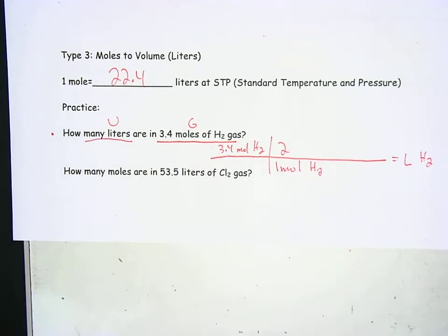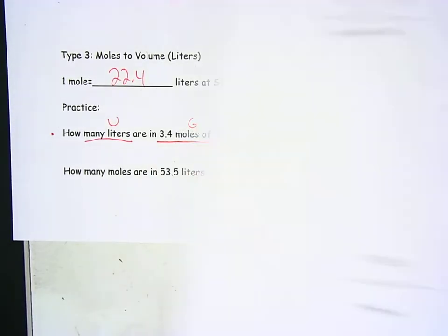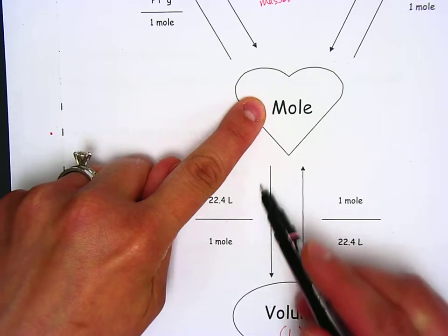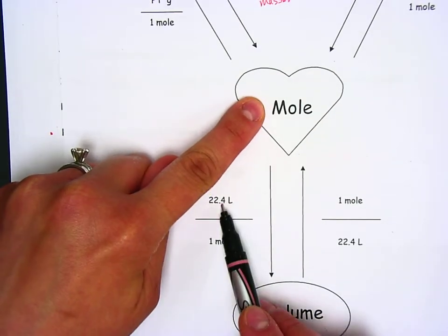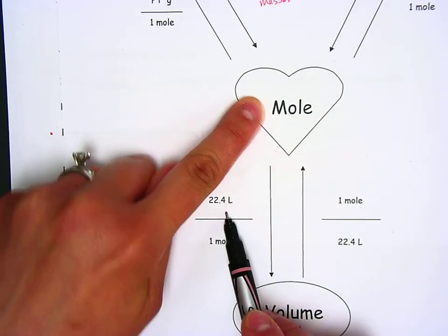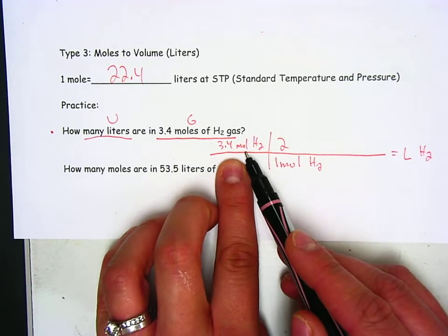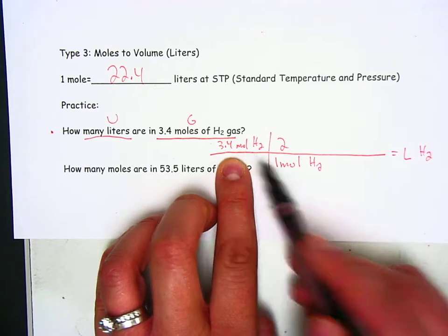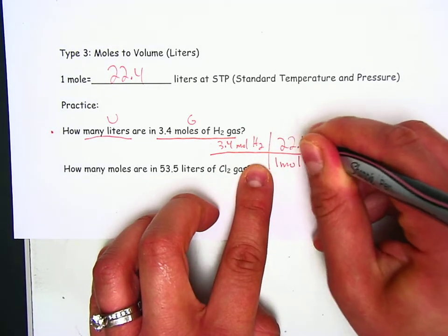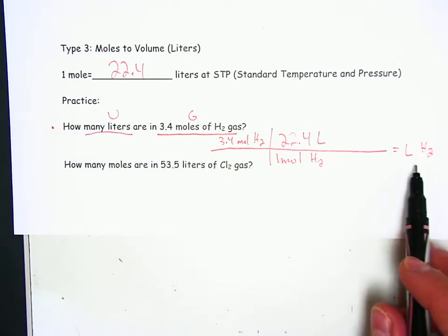So to cancel that out, to go from moles to liters, here's moles, here's liters. So we have one mole on the bottom, 22.4 liters on top. So the one mole on the bottom will cancel out the 3.4 moles on the top. 22.4 liters will leave us in liters here.